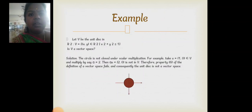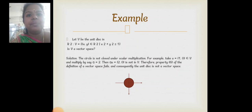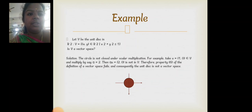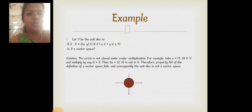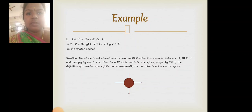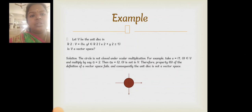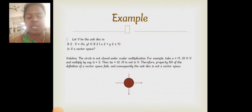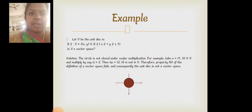Here comes an example proving this definition. Let V be the unit disk in R2, defined as the set of all (x, y) in R2 such that x² + y² ≤ 1. We have to prove whether V is a vector space. The unit disk is not closed under scalar multiplication, so if any one condition fails, it is not a vector space.